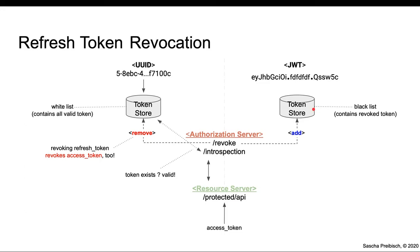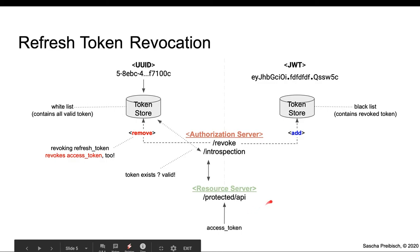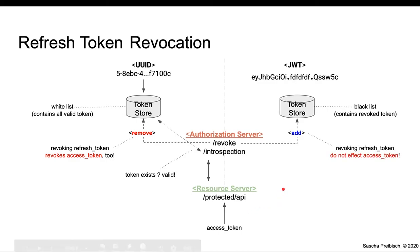Once they expire, they don't need to be in this database anymore. Now, if a refresh token gets added to this blacklist, it usually does not affect the access token. Because unlike the UUID database where you could have the refresh token and access token in the same database table, that is not the case here. So if a refresh token gets added to this list, it may be the case where related access tokens are still valid because they don't appear in this storage. That's a big difference.